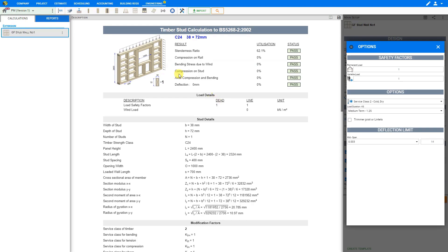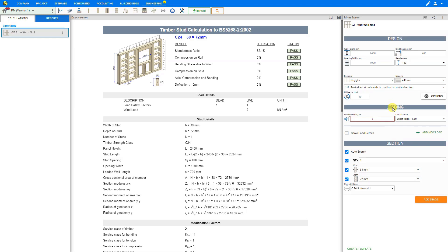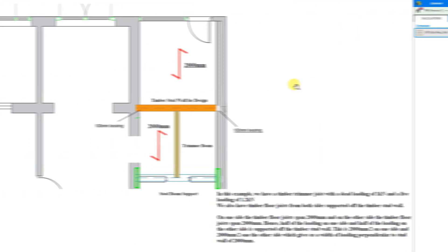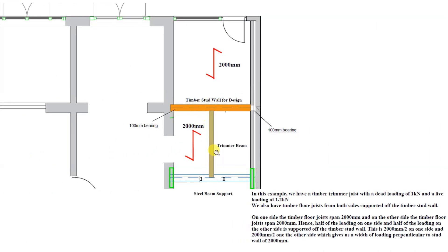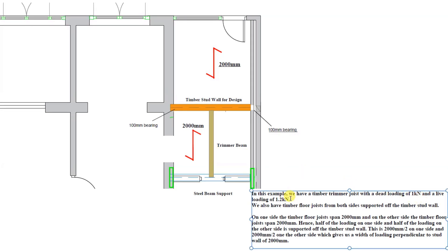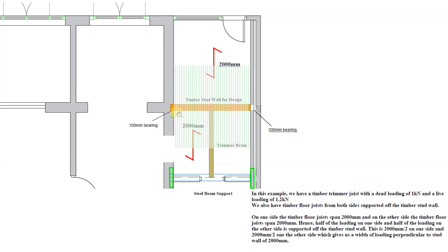In the description, we can see that the critical rail is the rail of the opening. Next, we can close this window and look at the loading input to identify what the stud wall is going to support. In this example, the timber stud wall supports a trimmer beam with a dead load of 1kN and a live load of 1.2kN. We also have timber floor joists from both sides spanning 2000mm each, so half of each side's loading is carried by the stud wall, giving a total width of loading perpendicular to the stud wall of 2000mm.